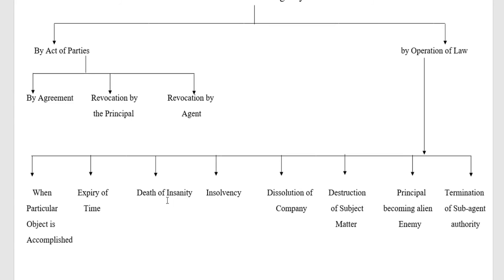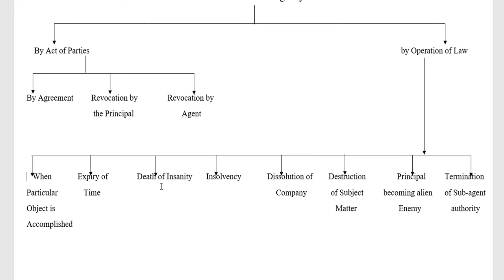The third circumstance is death or insanity. The agency will be terminated by the death or insanity of one of the parties. The same aspect is also applicable with regard to insolvency — insolvency of either party will also terminate the agency.